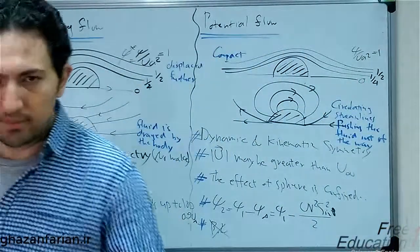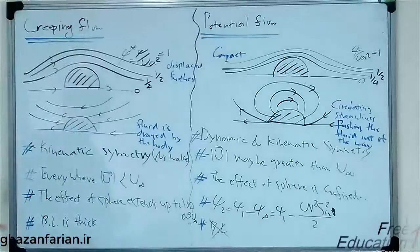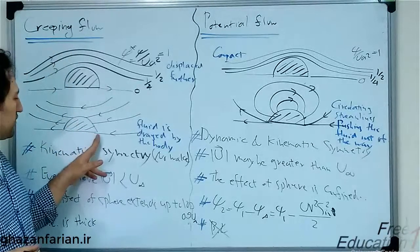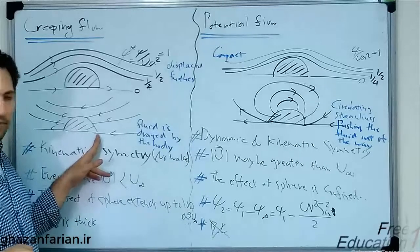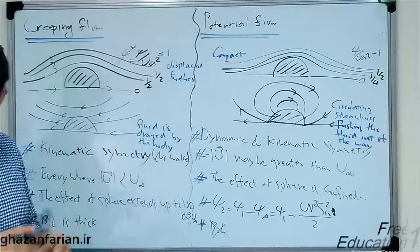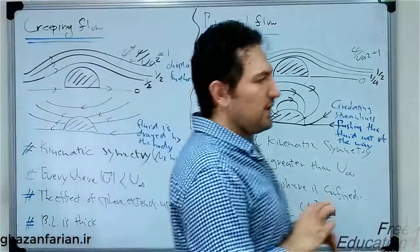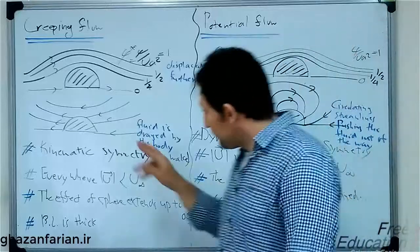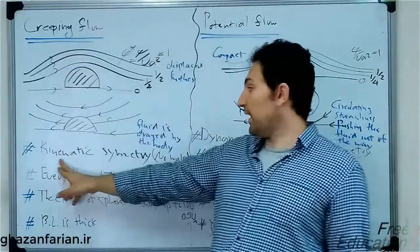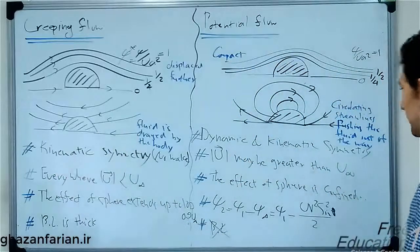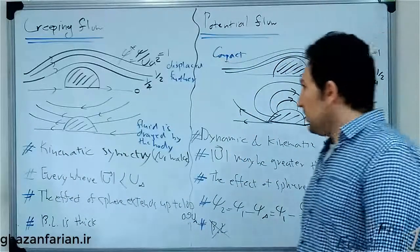Right here, the pressure here is positive. But the pressure on the back of the sphere is negative. So the magnitudes are equal, but the signs are opposite. So the pressure is not symmetric. So we have, in the creeping flow, kinematic symmetry. But in potential flow, we have dynamic and kinematic symmetry.